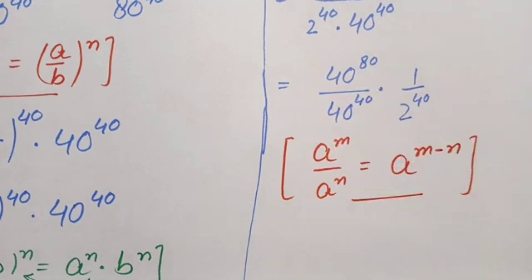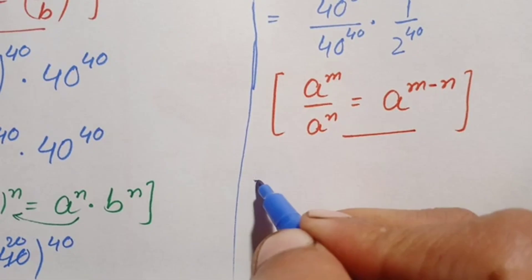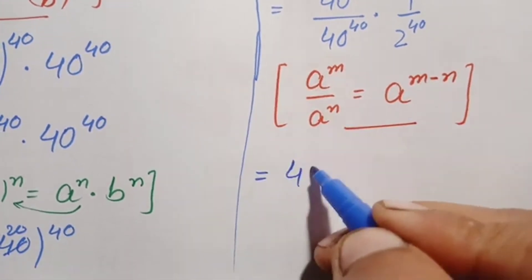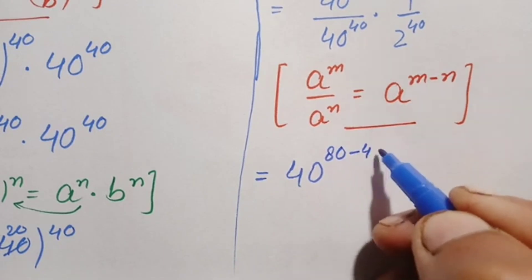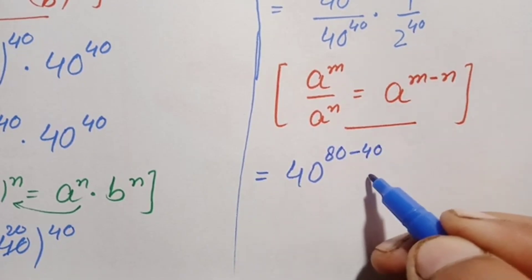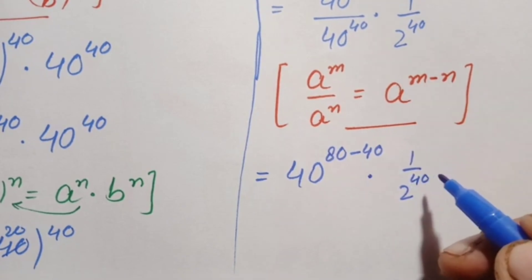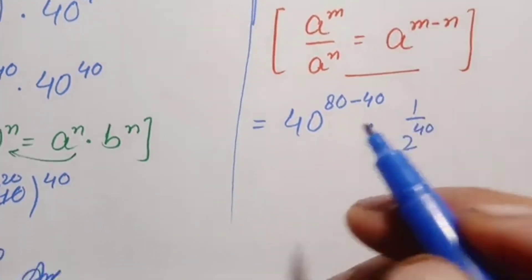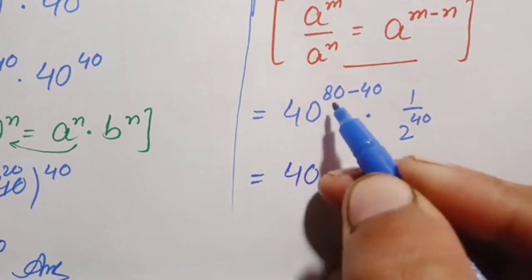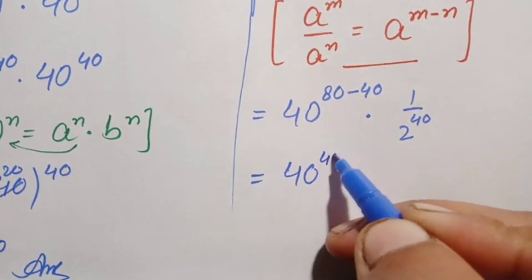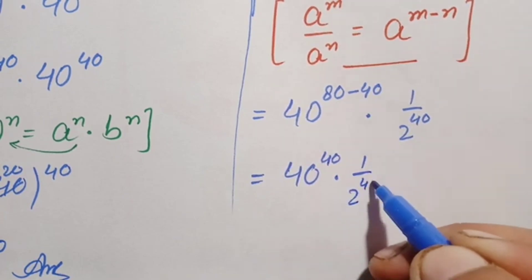Since both the numerator and denominator now share the same base 40, we apply the same-base division identity: a raised to power m divided by a raised to power n equals a raised to power (m minus n). So 40 raised to power 80 divided by 40 raised to power 40 becomes 40 raised to power (80 minus 40), which is 40 raised to power 40, times 1 divided by 2 raised to power 40.